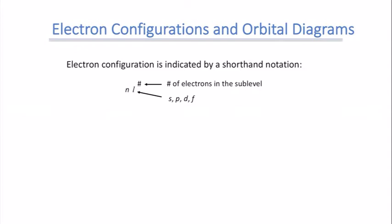When looking at electron configurations, we can write them in two ways. First is the shorthand way, where we write the principal quantum number n — say n equals 2 — then the orbital shape l, such as s, giving us 2s. The superscript tells us the number of electrons in that subshell, so 2s superscript 2 means two electrons in the 2s subshell. That's one way to write electron configurations by shorthand.